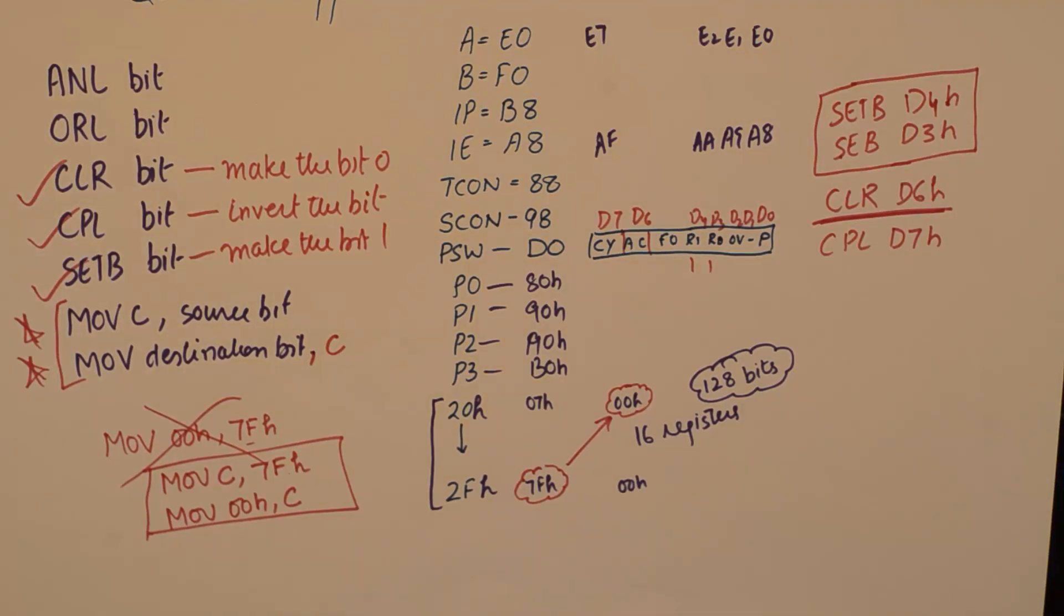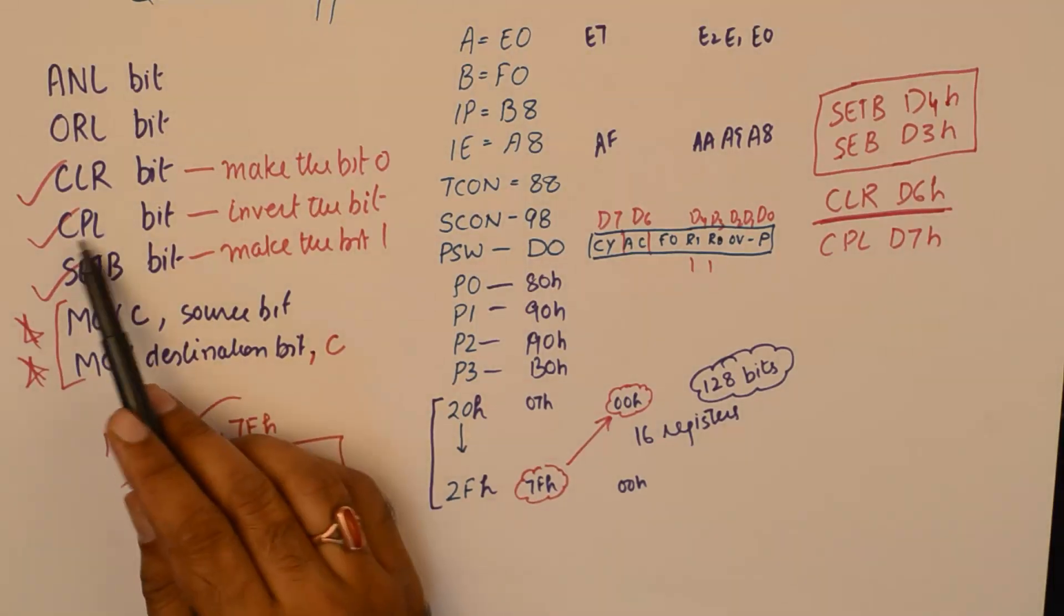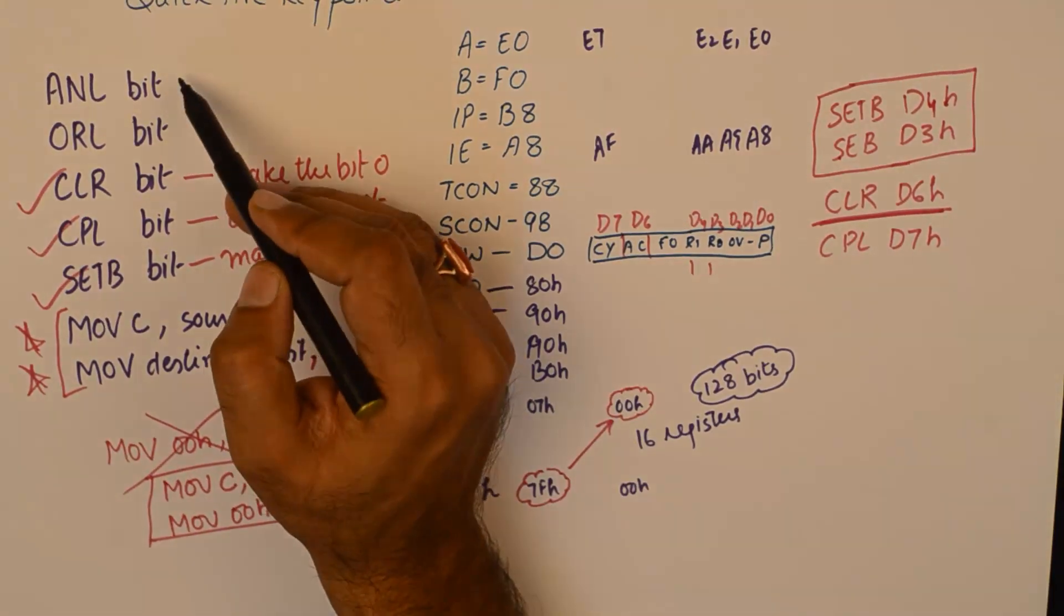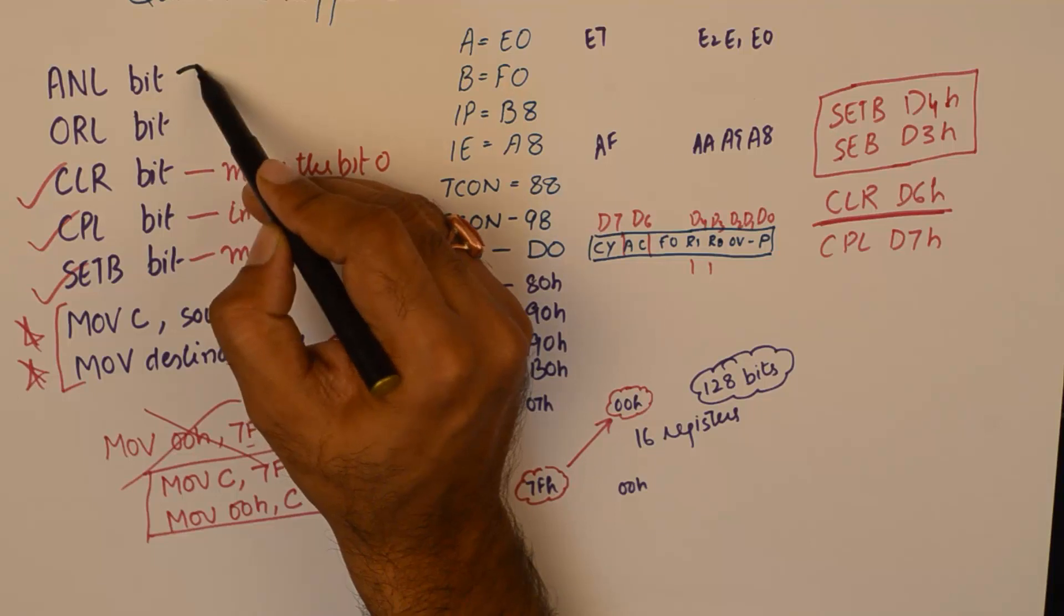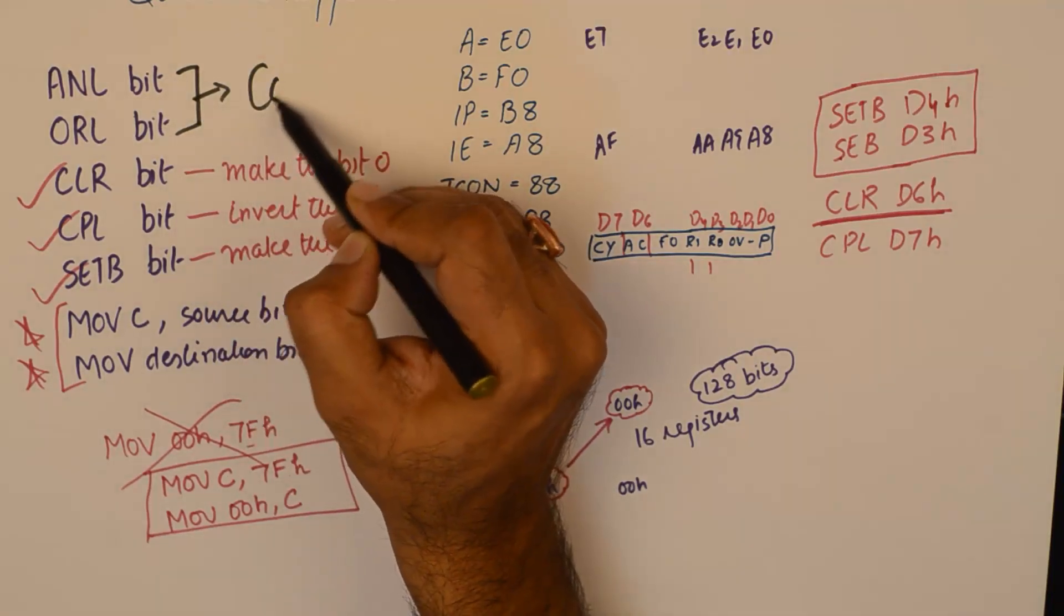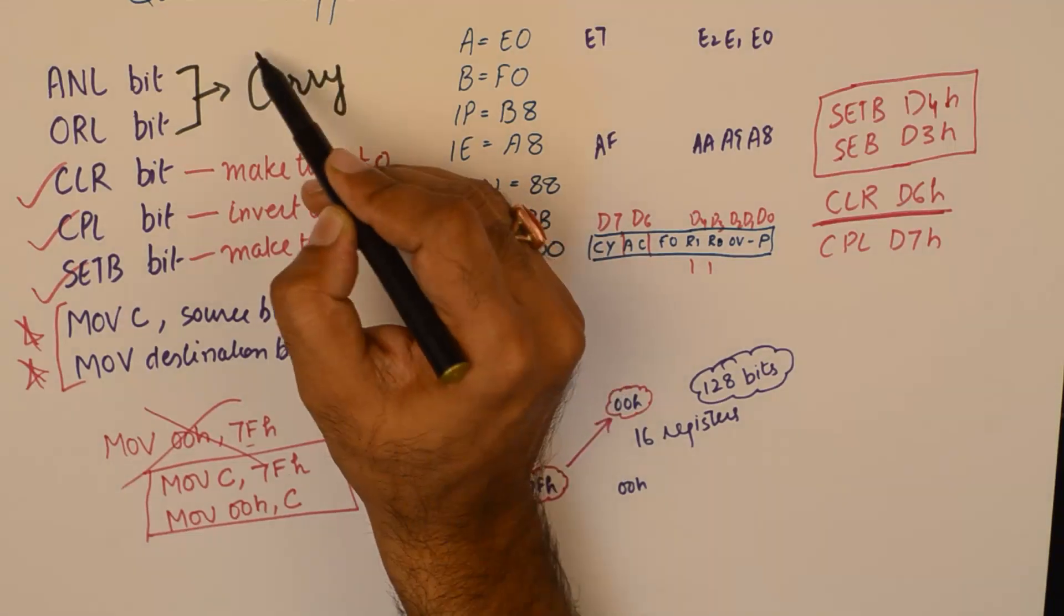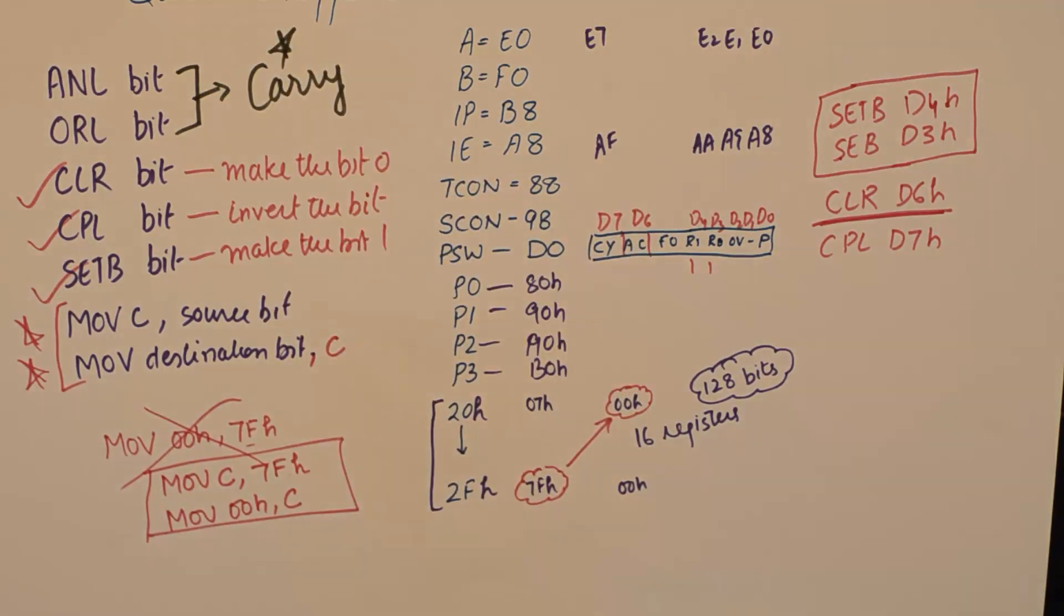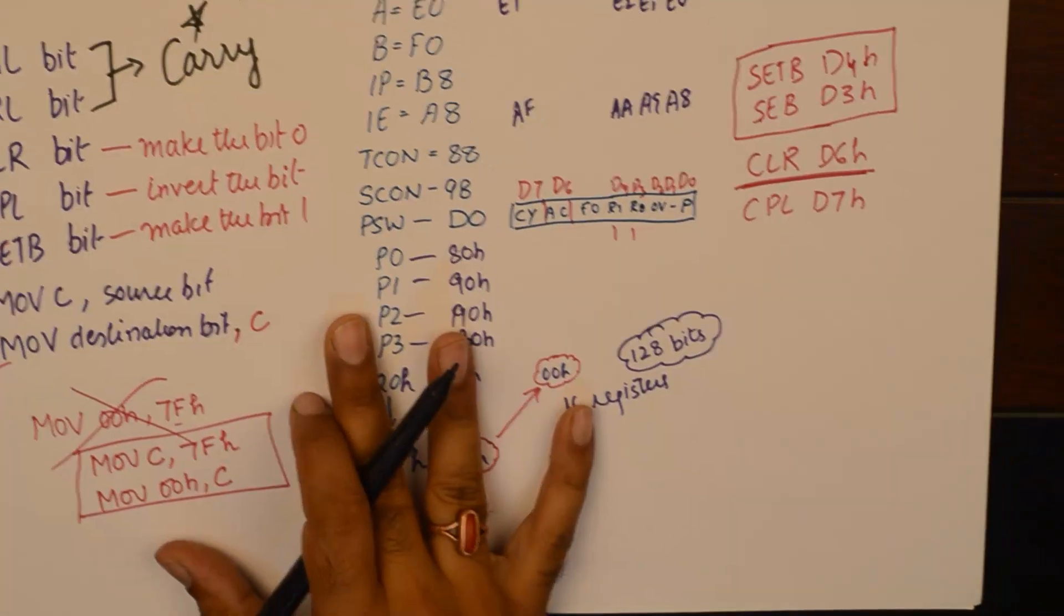Alright, the logical operations are just two operations which are allowed. One is AND operation, the other one is OR operation. The NOT operation is achieved by CPL. So these two operations are only applicable to carry again, a star point.